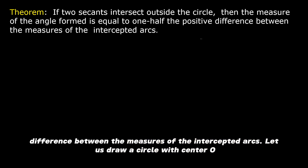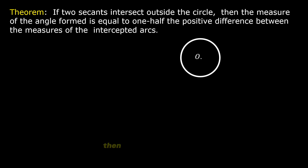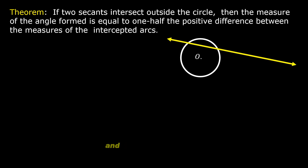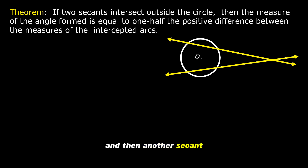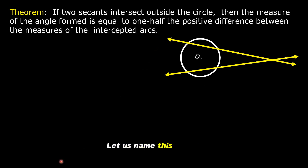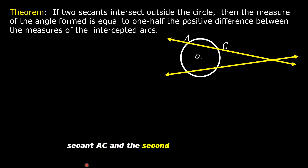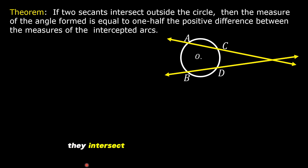Let us draw a circle with center O. Then let us draw a secant, and then another secant intersecting outside the circle. Let us name this secant AC, and the second secant BD. They intersect outside the circle at point E.